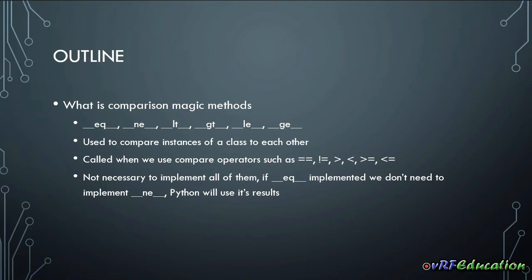Hi there, this is Vahid from VRF Education channel, and it is the sixth edition of object-oriented programming in Python. Today I'm going to continue our discussion about magic methods in Python classes. We already got familiar with the concept of these methods — Python calls them in specific situations automatically, since these are a specific type of methods, not ordinary methods. Today we are going to check comparison magic methods.